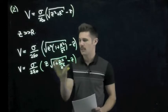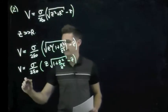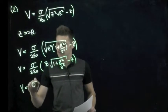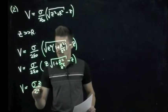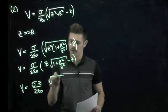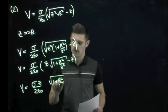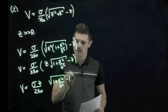Now there's a z in both terms inside the brackets here so we can factor that out. And we have sigma times z over two epsilon naught times the square root of one plus r squared over z squared minus one.